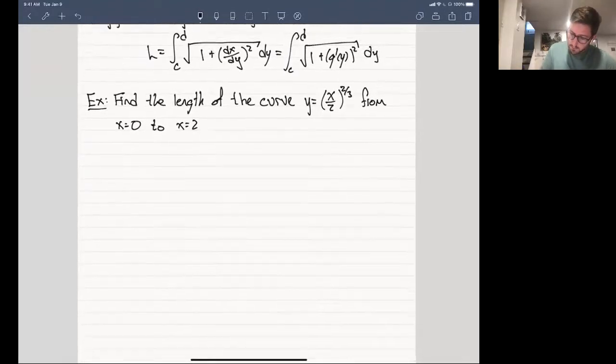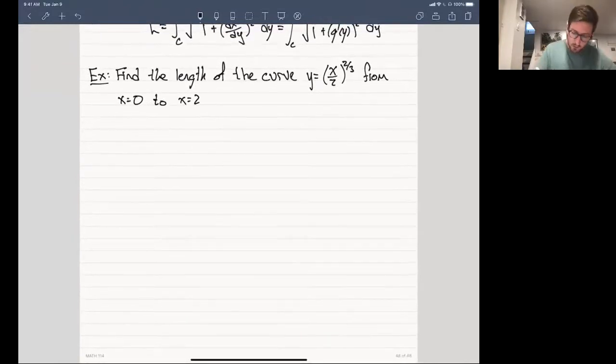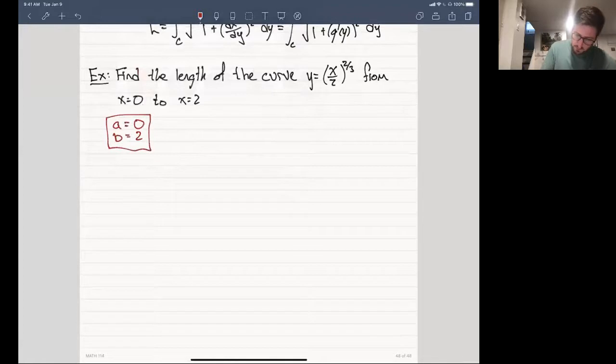So just like in the previous examples from the previous video, we're immediately given the endpoints. Let's leave them off to the side for now. So I'm going to write a and b because the bounds are given in terms of x and we were using a and b to denote bounds in x. We'll come back to this. We'll talk about how they turn into y once we have to do that. But let's first see why exactly we actually have to turn this into y.